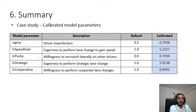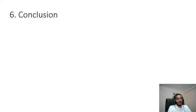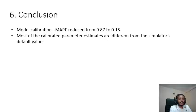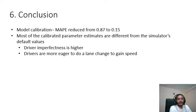To conclude, we can see that using the automated calibration procedure we were able to reduce the mean absolute percentage error from 0.87 to 0.15. We see that most of the calibrated parameter estimates are different from the simulator's default value, suggesting that in Sri Lankan conditions the driver imperfectness is higher and drivers are more eager to do lane change to gain speed. Drivers are also more willing to encroach laterally on other drivers.